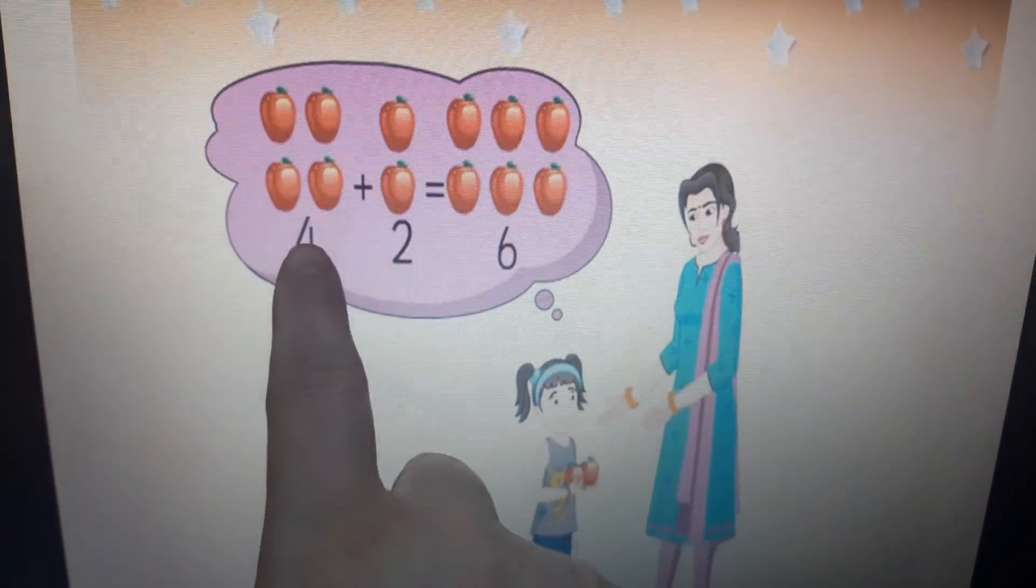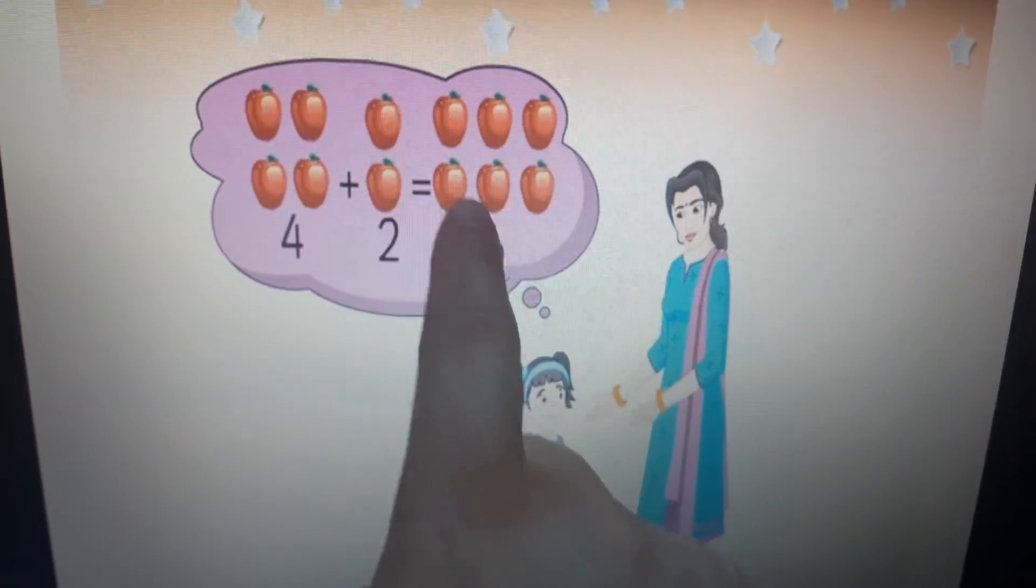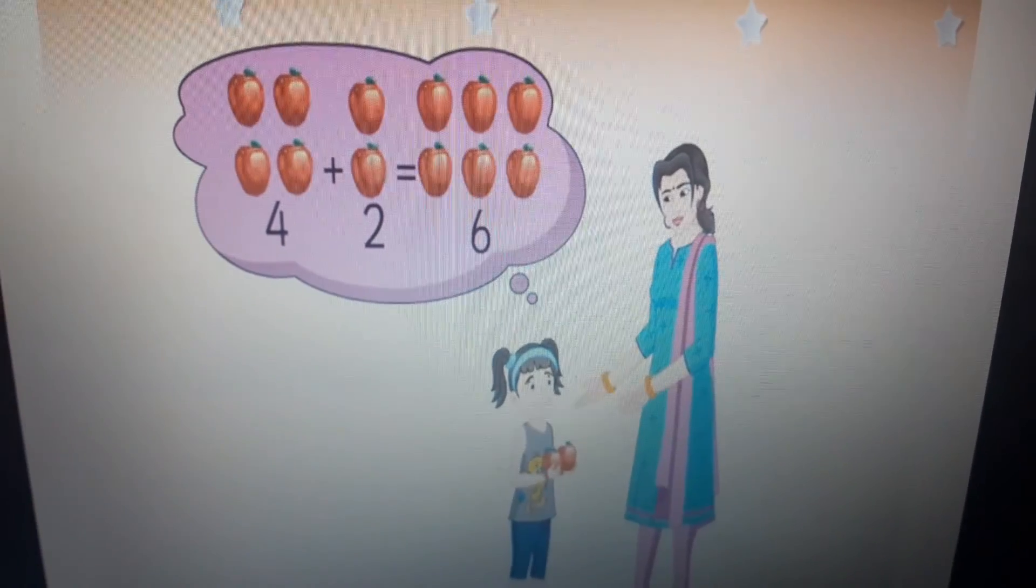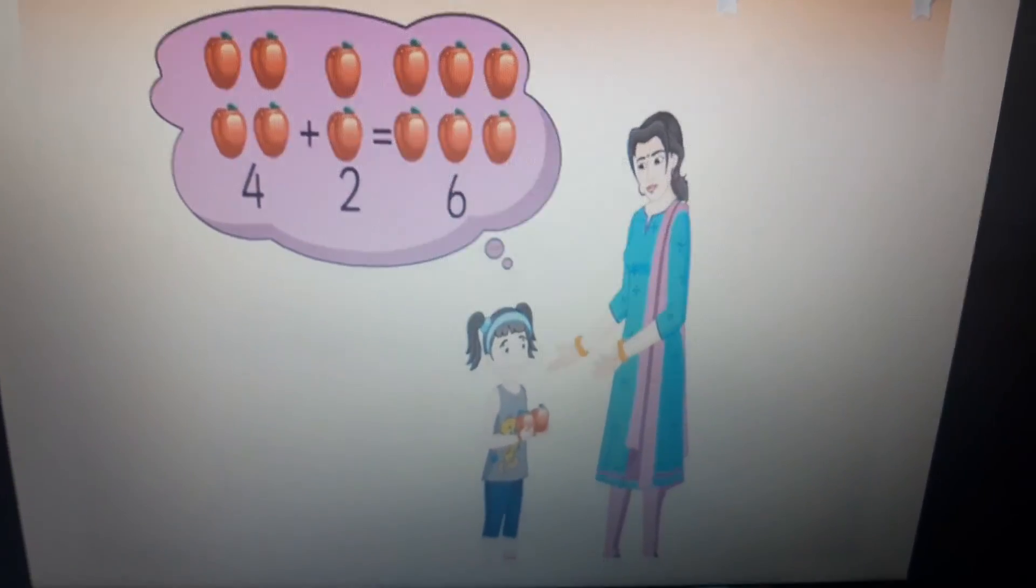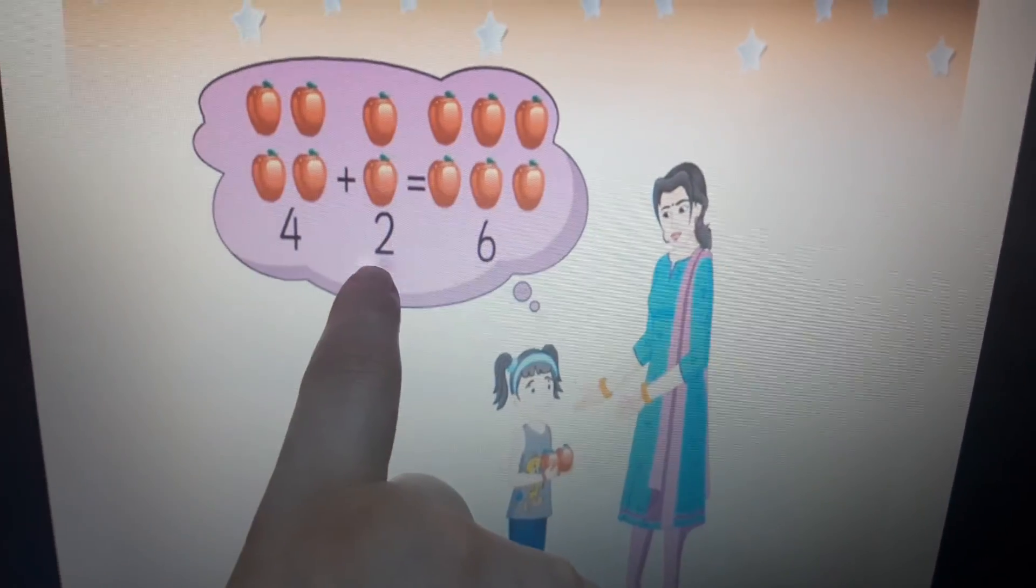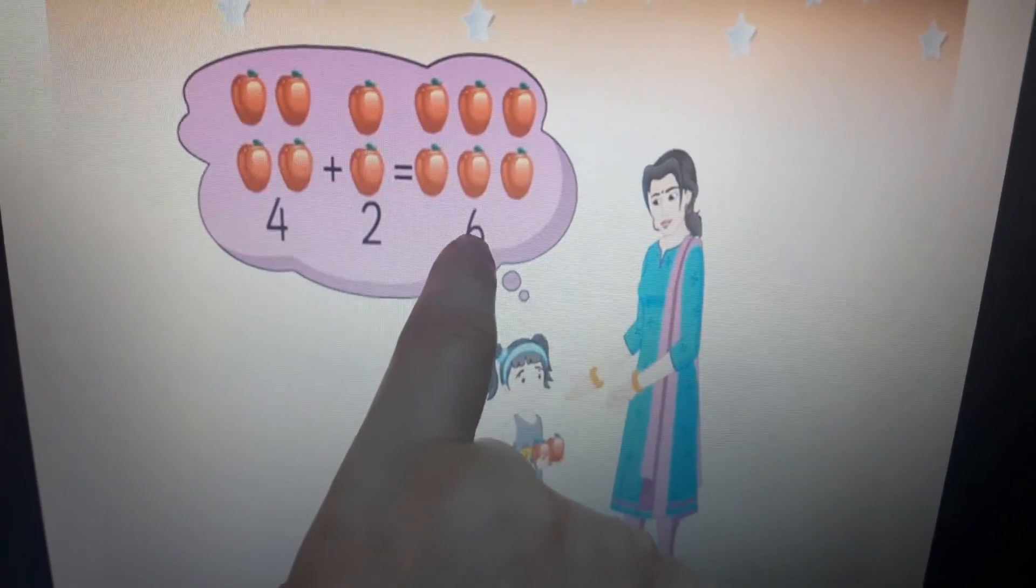So Mira has six apples in all. That means four plus two equals six. The addition sentence is four plus two equals six.